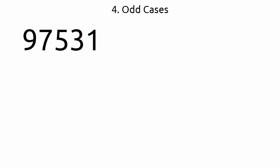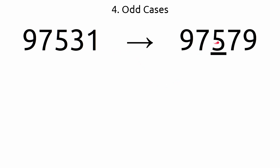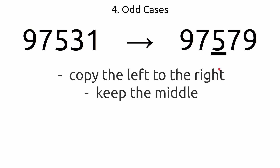For odd cases, let's take 97531. Since we have to find the next smallest palindrome, we want to make this number a palindrome. We know 5 is the middle element, so we don't touch it. What we need to do is reflect the values on the left side to the right side. So 97 on the left gets copied as 79 on the right, giving us 97579. We copied the left to the right, flipped it, and kept the middle as is.